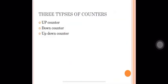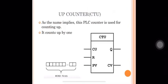There are three types of counters. First is the up counter. Second is the down counter. And third is the up-down counter. The up counter, as the name implies, is used for counting up — it increments by one for each input pulse.